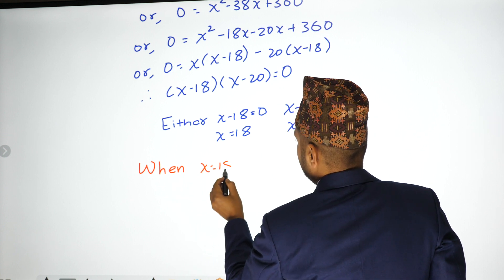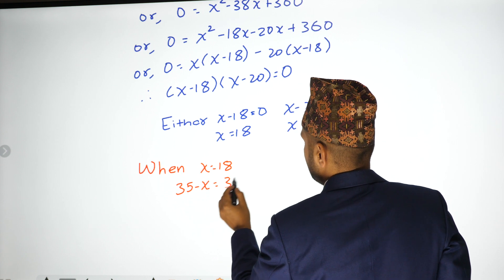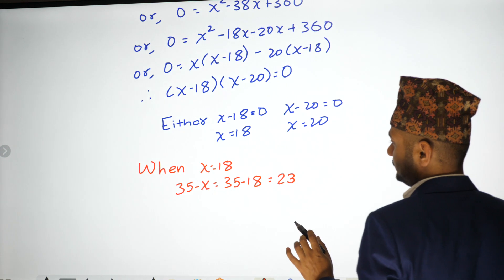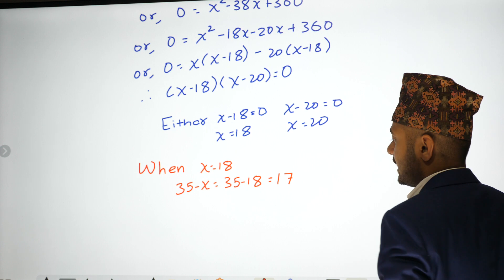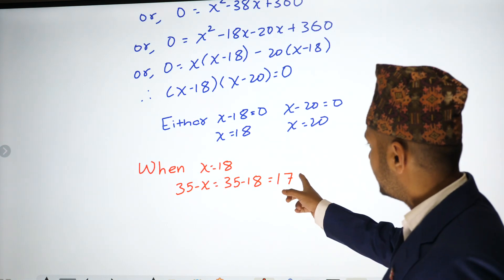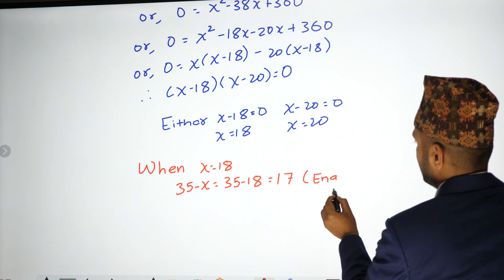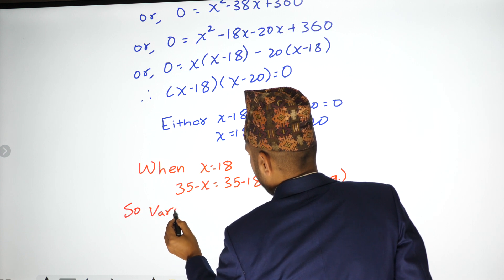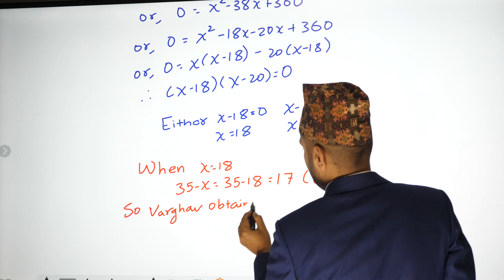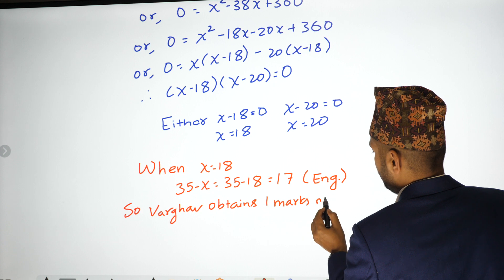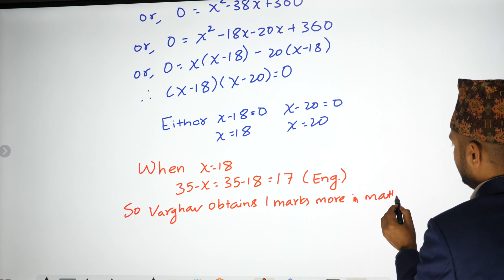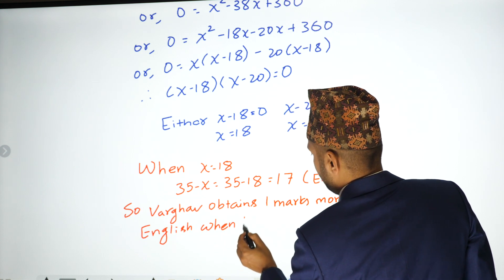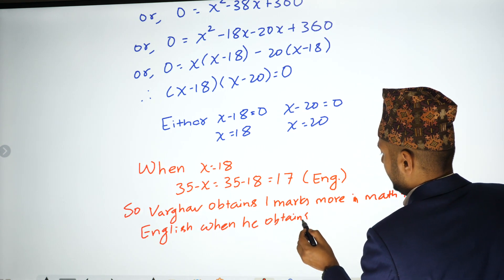When x equals 18, 35 minus x equals 35 minus 18 equals 17. So English marks is 17. Math marks is 18, English marks is 17. Therefore, math is 1 mark more than English. Bhargav obtains 1 mark more in math than English when he obtains 18 marks in math.